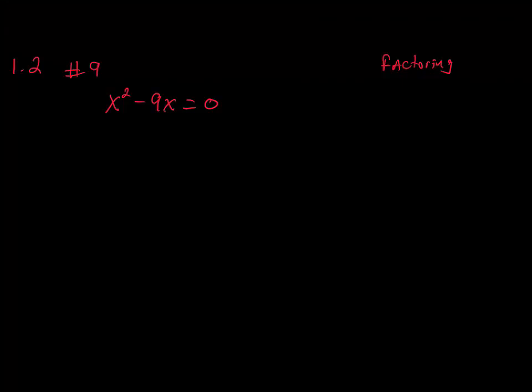For number 9, we're going to go ahead and factor this to find the solutions to this quadratic equation. The first thing that we notice is that the constant here is 0. When we get an equation that looks like this, we can actually just factor the x squared minus 9x. The best thing to do is to remove one of the variables from x squared and 9x.